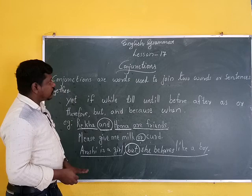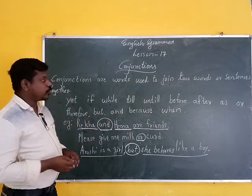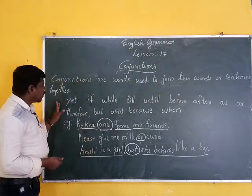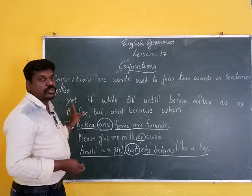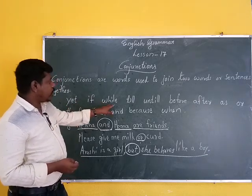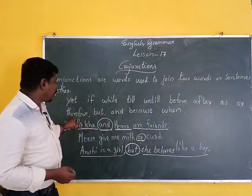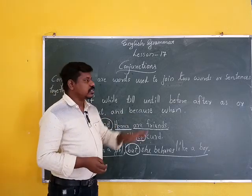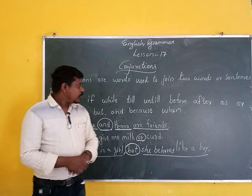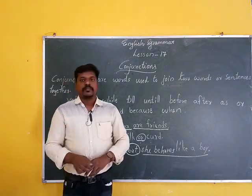So, what is a Conjunction? Conjunctions are words that are used to join two words or sentences together. Some Conjunction words are: till, if, while, until, before, after, as, therefore, but, and, because. You should study these Conjunction words and their definition. Ok, thanks to all.